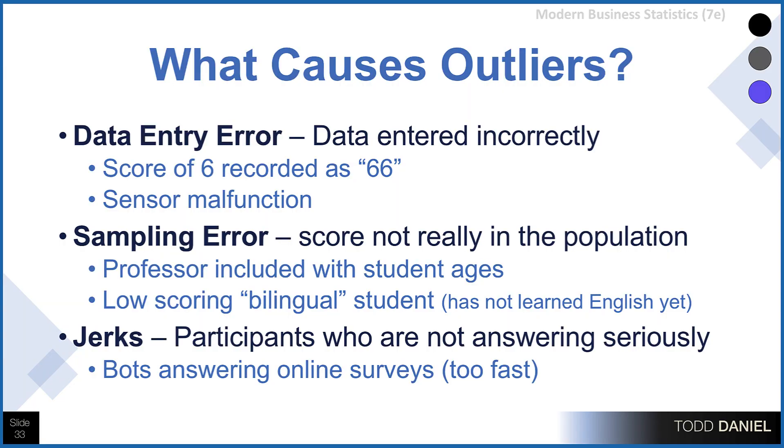Another cause for outliers might be sampling error — we include someone in our sample who is really not part of the population that we intend to study. For example, we're looking at a collection of scores from a classroom, and as we examine the age values, we find one individual who is unusually old compared to the average age of all the other individuals in our sample. What happened was we included the professor in this study, and the professor is not really part of the population of college students that we're trying to study. So we would probably remove that outlier.